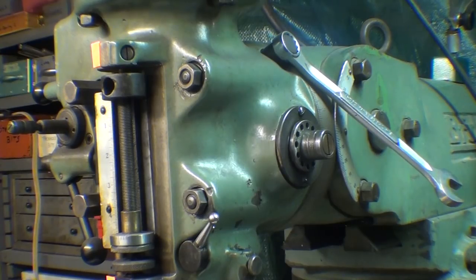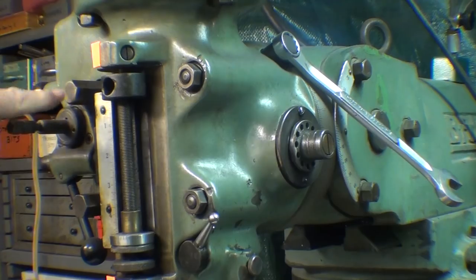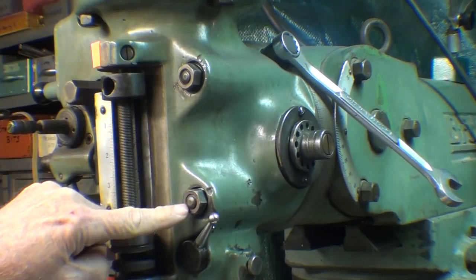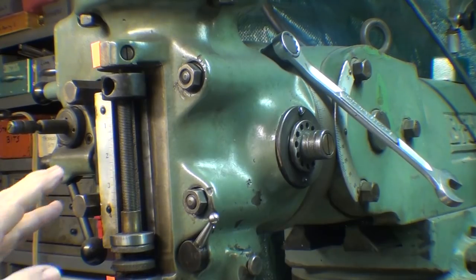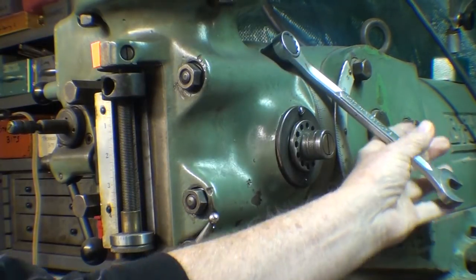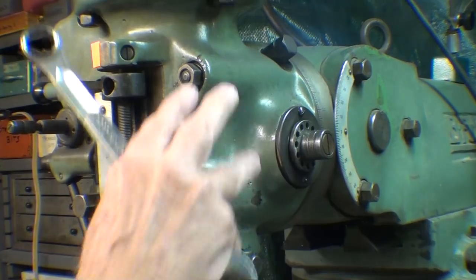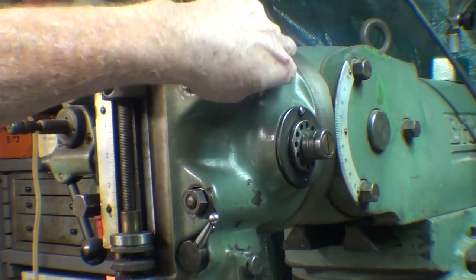In order to tilt the head, you need to loosen one, two, three, four nuts, but not very loose, they should remain snug, and then with your wrench on this bolt, you're able to tilt it, that's a worm up there.